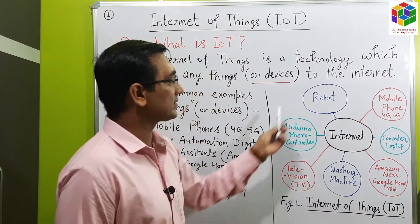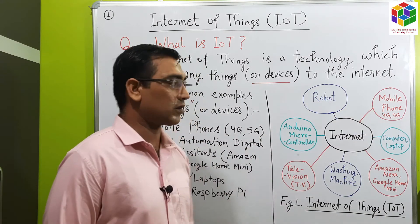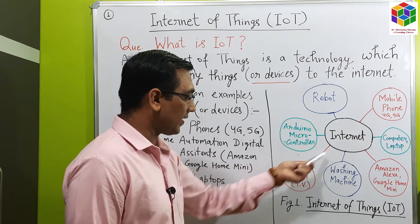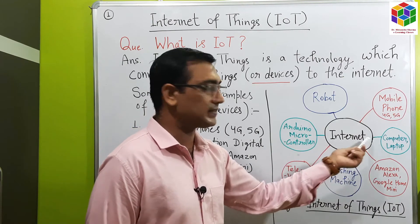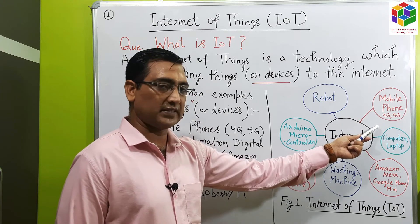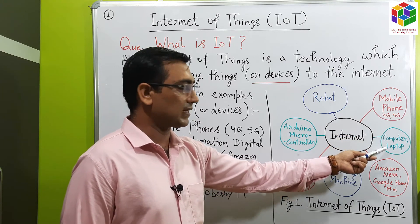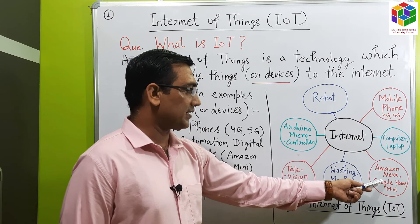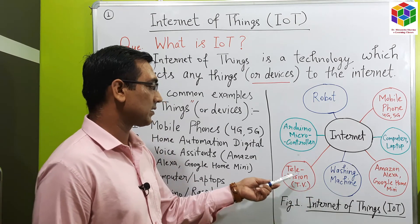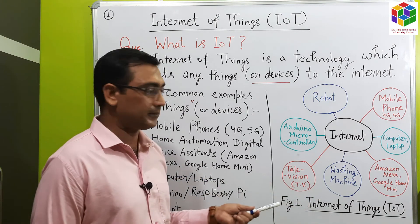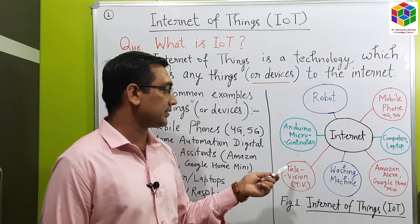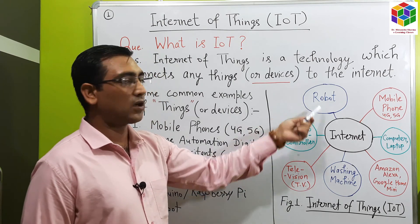Now we will see this diagram. This diagram illustrates the concept of Internet of Things. Here, at the center, the internet is located, and it is connected to various devices — the things. Number one, mobile phone, that is 4G or 5G technology based. Computer or laptop. Amazon Alexa and Google Home Mini. Washing machine — that is, domestic appliances controlled by Amazon Alexa or Google Home Mini. Television, which is also controlled by these digital voice assistants. Arduino microcontroller. Robots. These are the examples of Internet of Things.